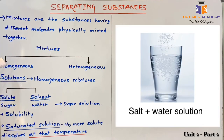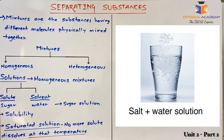Talking about homogeneous mixtures, they are the ones in which the molecules or substances are totally mixed with each other and cannot be easily seen with the naked eye. For example, when sugar or salt is added in water, you will see the solution but you will not be able to identify sugar and salt particles inside the water.